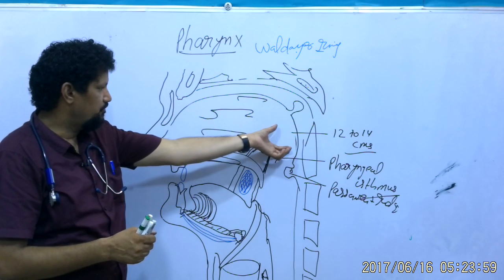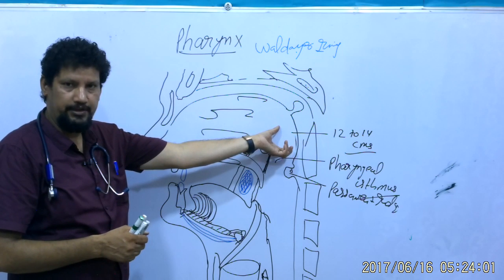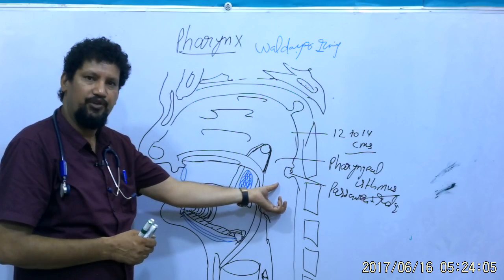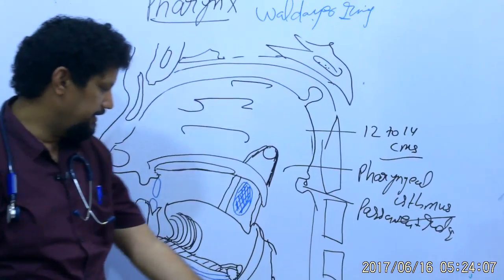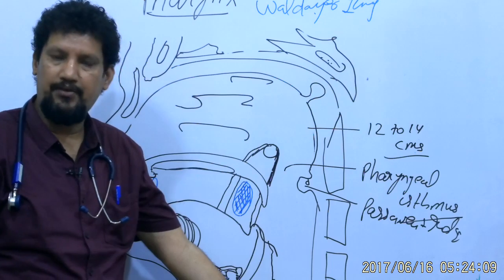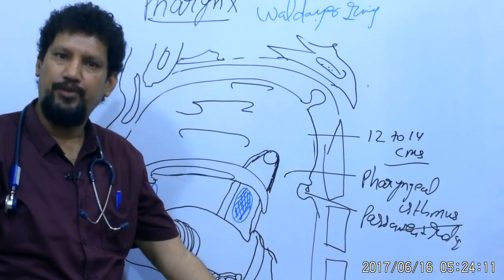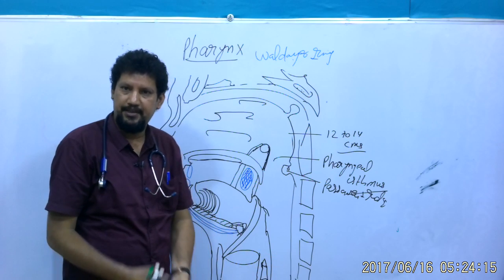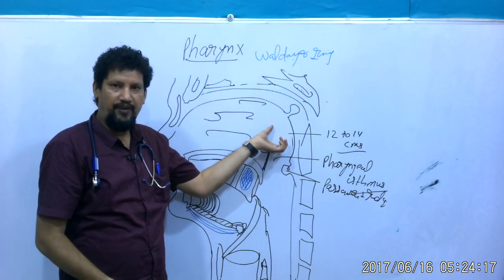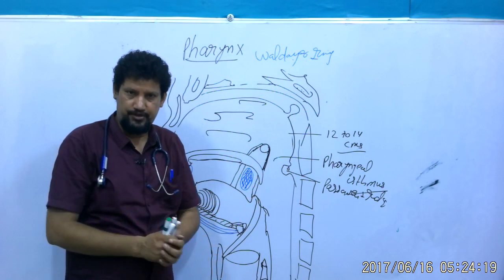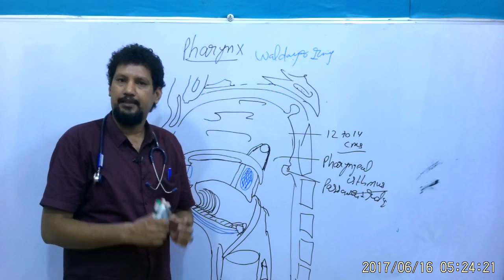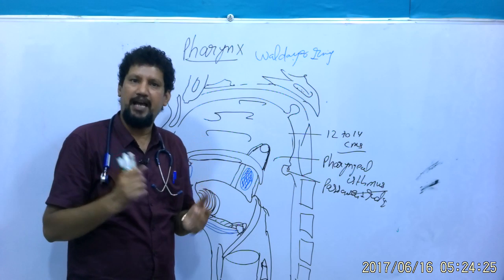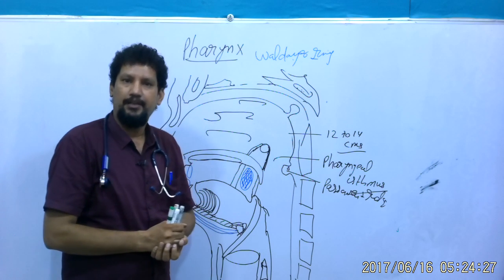This part is known as the epipharynx or nasopharynx. Anatomically and functionally, the pharynx is divided into three parts: the nasopharynx, the oropharynx or mesopharynx, and the laryngopharynx or hypopharynx. In simple words, the nasopharynx is the posterior extension of the nasal cavity.